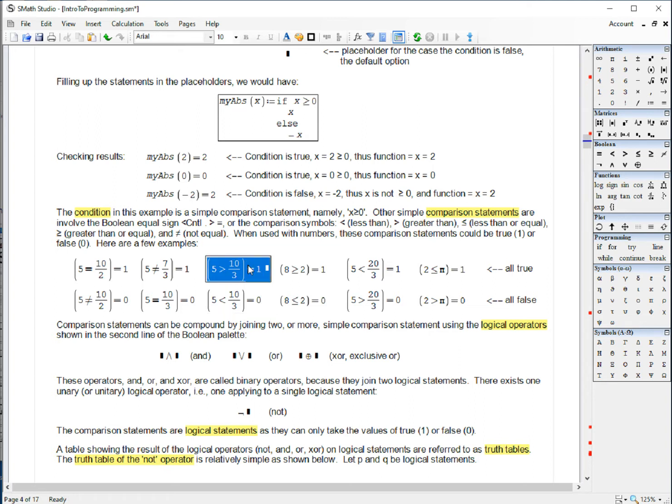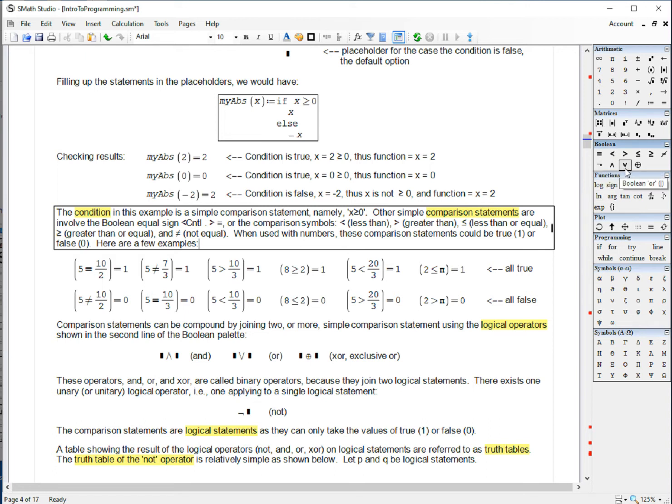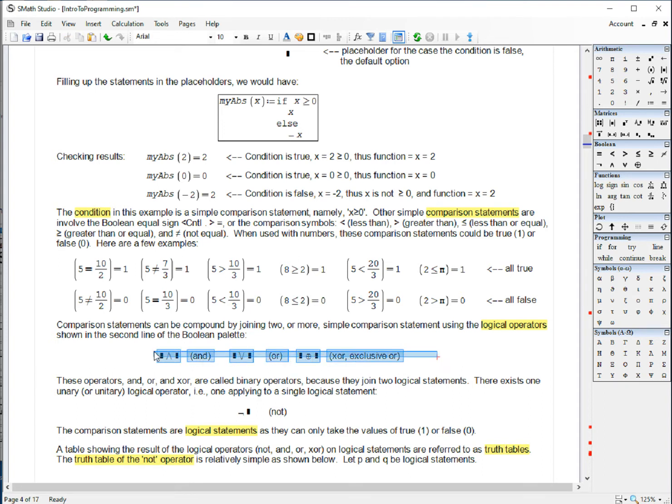These are also referred to as logical statements because they can get a logical value of true or false. And they can be combined using these symbols in the boolean palette. The symbols correspond to the AND or conjunction, OR or disjunction, exclusive OR or XOR.